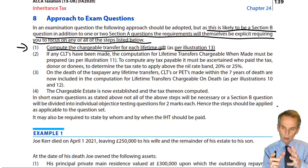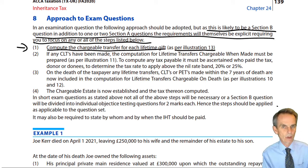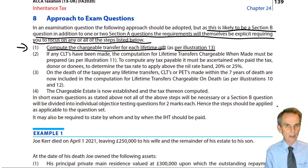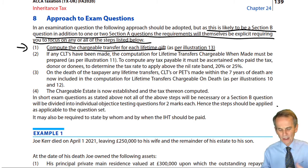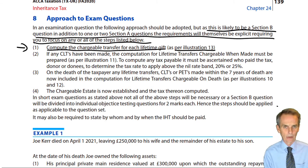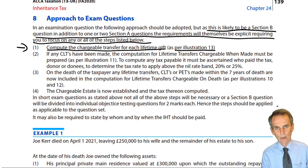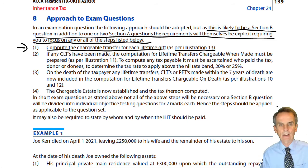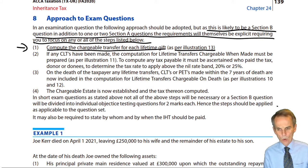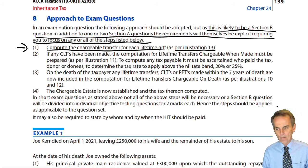A possible first exercise is to compute the transfer of value, where you'd have shares in an unquoted company and be giving away some but not all of your shares. This tests the loss-in-value principle: the difference between what the taxpayer had before the transfer and what they had after. Otherwise, you may get a simple exercise where the transfer of value is obvious — cash of £100,000, £200,000, £400,000, or a property valued at a given amount — where there is no work to do. We're never going to have to deal with more than two or three transfers.